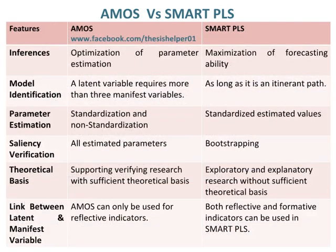Inferences of AMOS are based on optimization of parameter estimation, whereas inferences of SMART PLS are based on maximization of forecasting ability. Model identification of AMOS requires a latent variable to have more than three manifest variables, whereas model identification of SMART PLS is valid as long as it is an itinerant path.